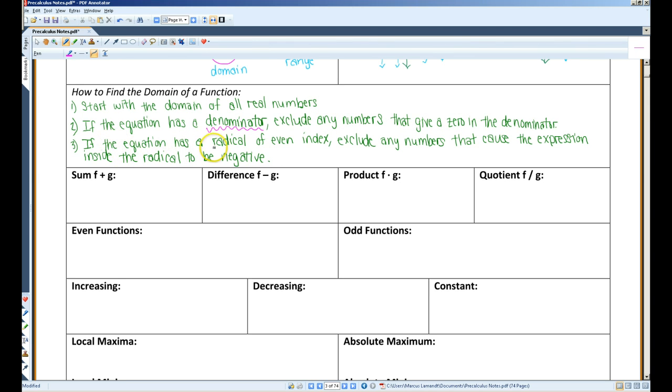If the equation has a radical of even index, so a square root, a fourth root, a sixth root, anything with an even index, exclude any numbers that cause the expression inside the radical to be negative. If there's a radical in the expression, usually what I will do is I will take whatever is inside the radical and set it greater than or equal to zero. That will give me what x has to be in order to make sure the expression inside the radical is positive.